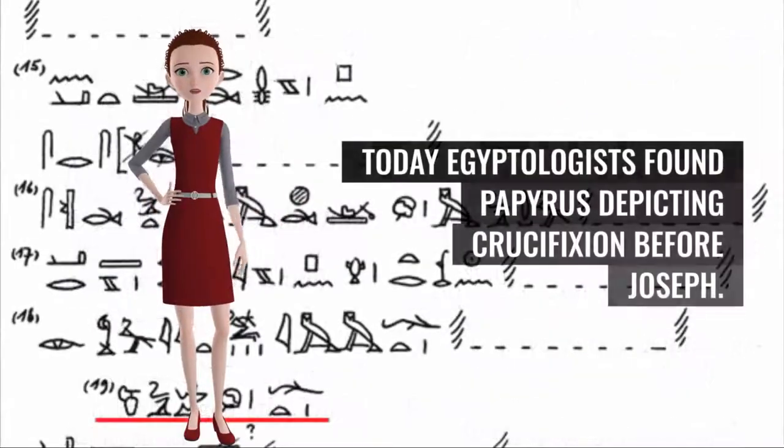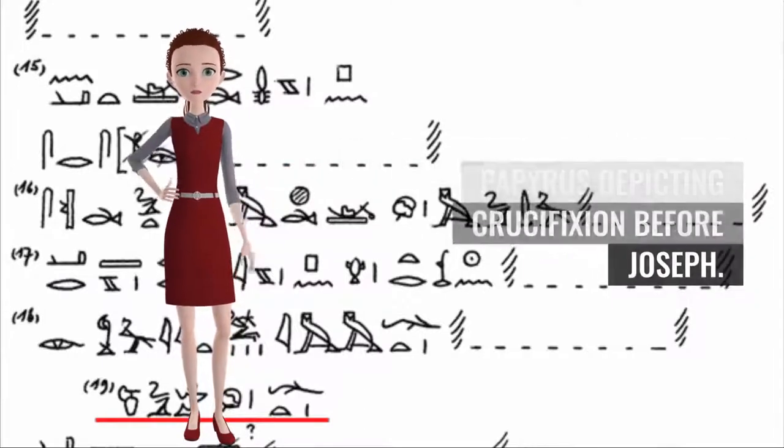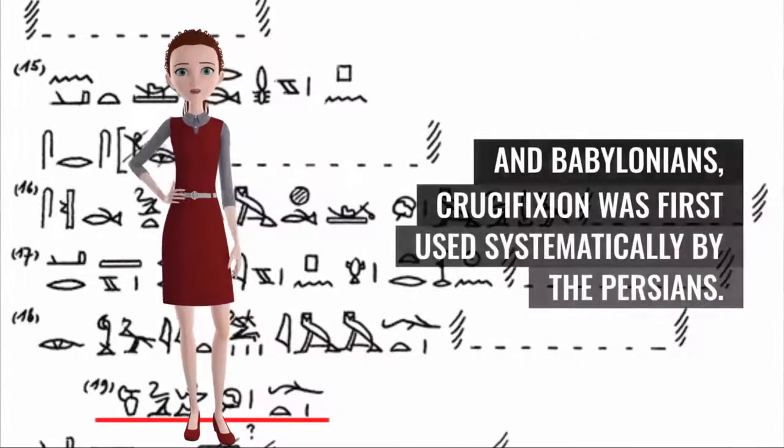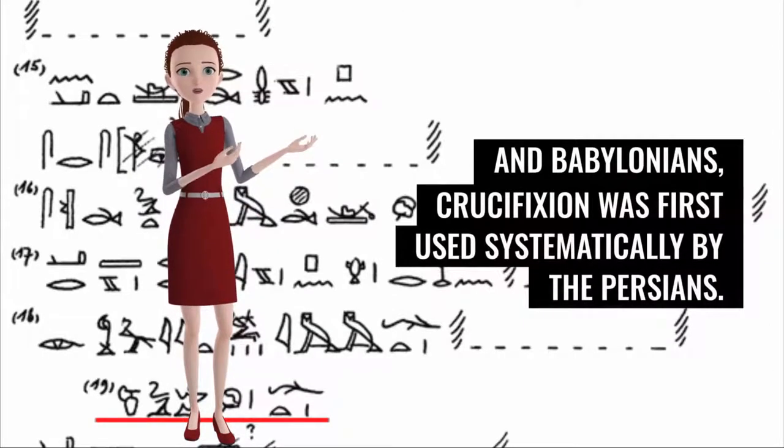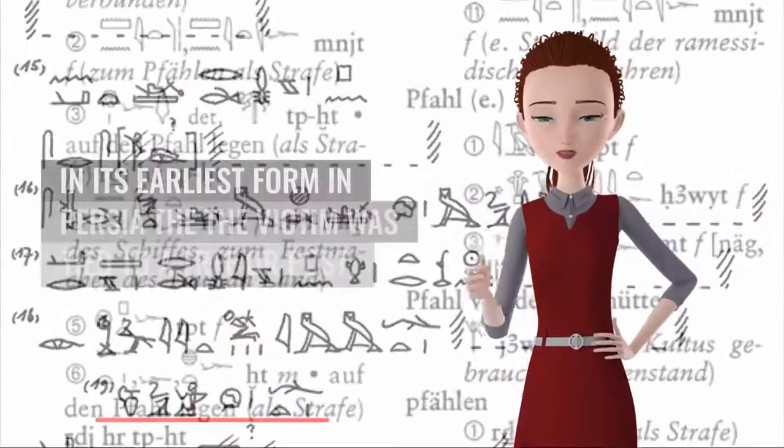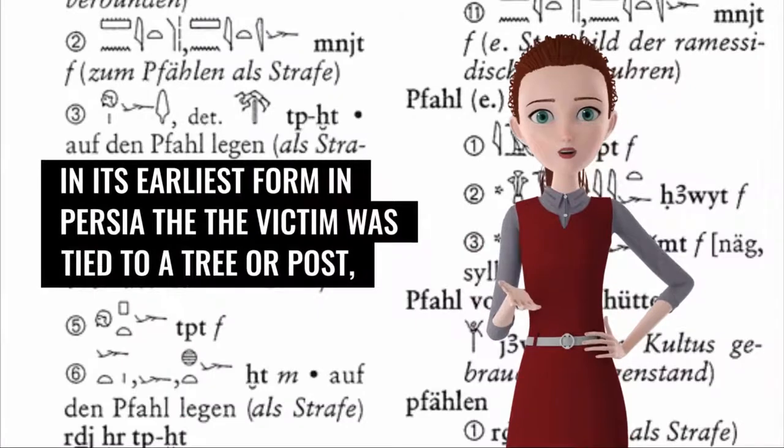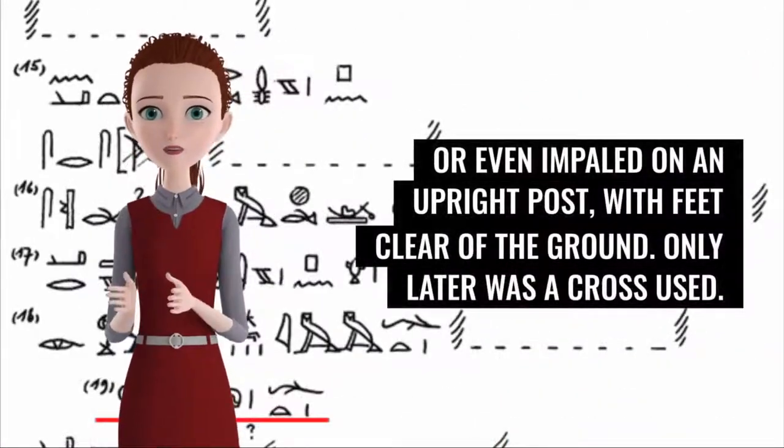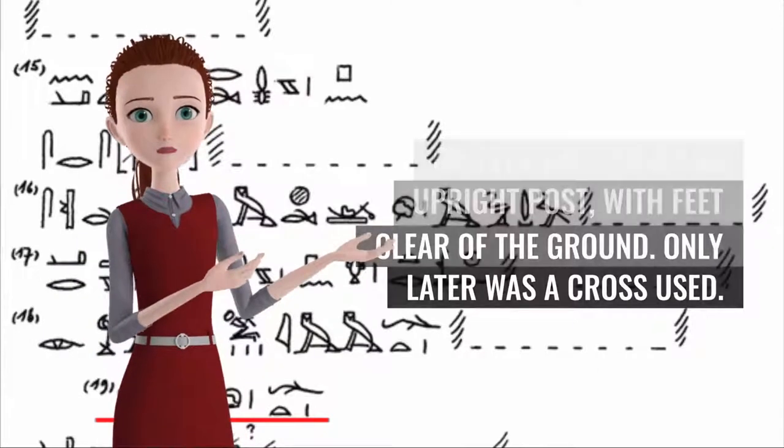Today, Egyptologists found papyrus depicting crucifixion before Joseph. History probably originating with the Assyrians and Babylonians. Crucifixion was first used systematically by the Persians. In its earliest form in Persia, the victim was tied to a tree or post, or even impaled on an upright post with feet clear of the ground. Only later was a cross used.